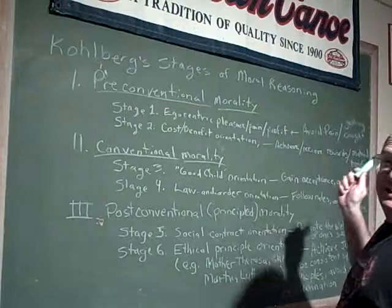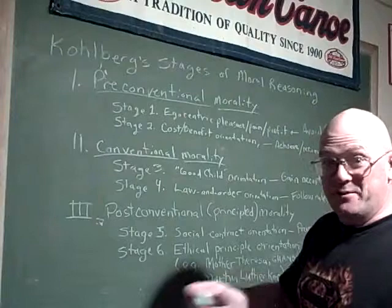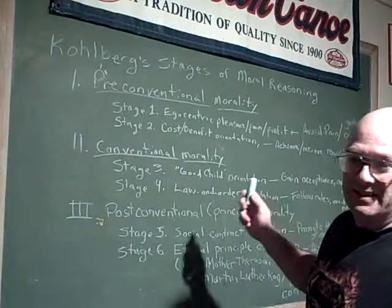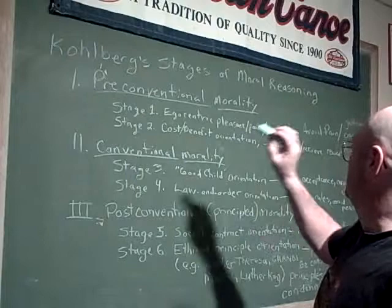It's Lawrence Kohlberg's Stages of Moral Reasoning. I thought this would be interesting to cover, and as a segue into what I wanted to say about what happened. There are pre-conventional morality, conventional morality, and post-conventional morality — these are the different levels, and each level has two stages.